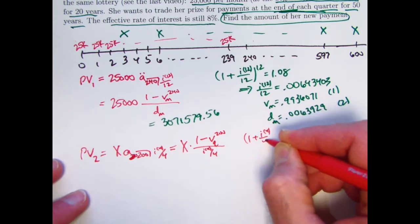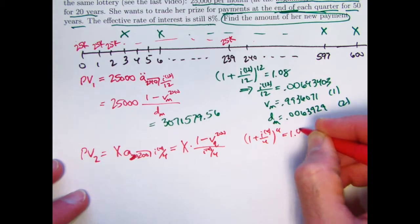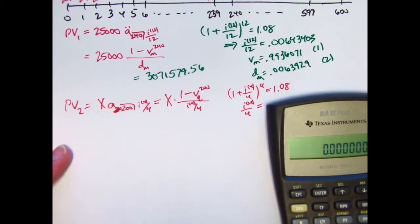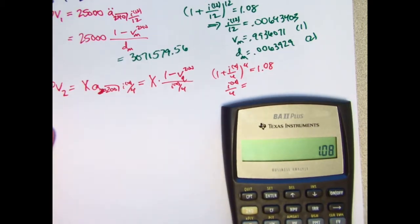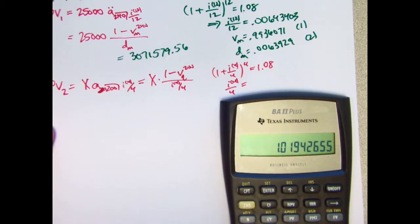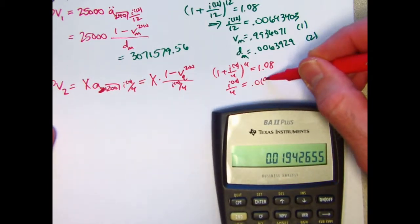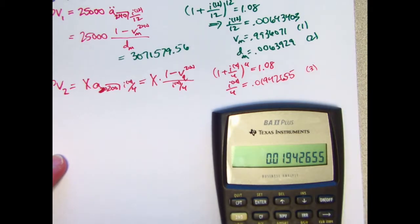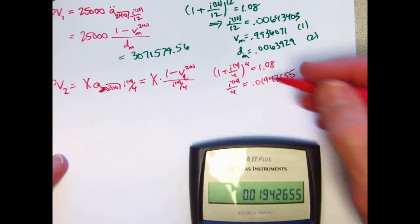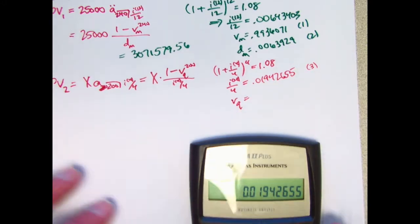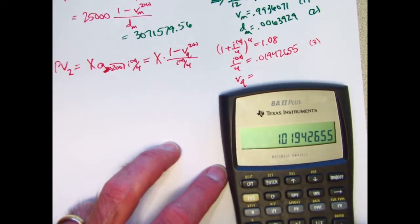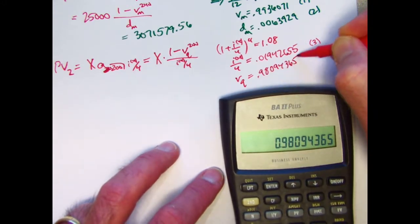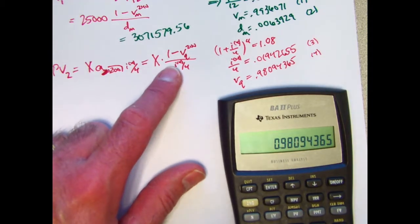1 plus I4 over 4 to the 4th power should be 1.08. So I4 over 4 will be, take 1.08 to the 1 4th power, 0.25. Subtract 1. I4 over 4 is 0.01942655. That's probably worth storing. I'll store it in register 3. Store 3. The corresponding quarterly V, I can find by adding one to this and taking the reciprocal, the quarterly V is 0.98094365.